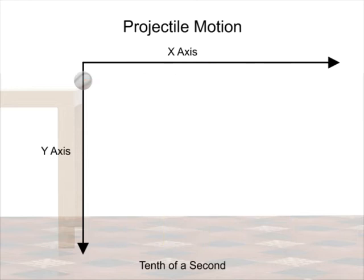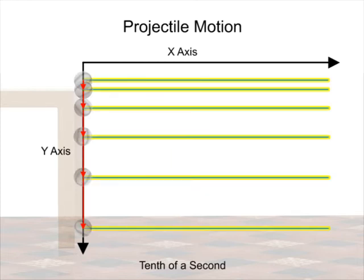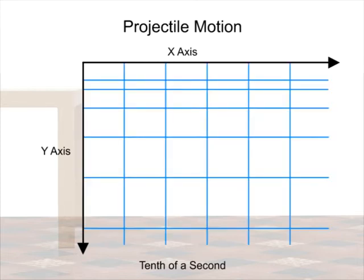The only force acting on the ball is gravity, accelerating the ball towards the ground. The curvature of the ball's trajectory is the combination of its constant horizontal motion and its increasing vertical motion.